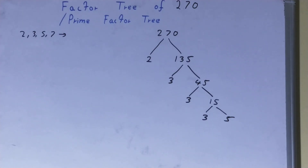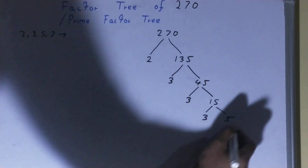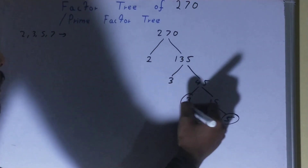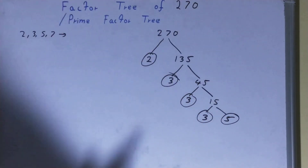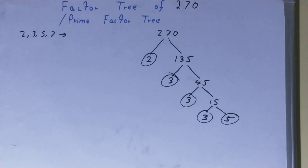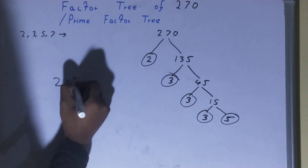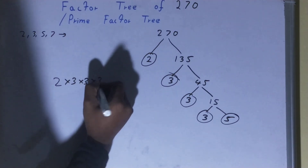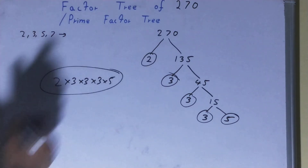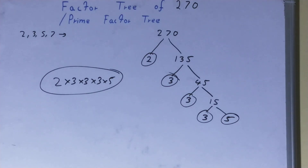The only thing you need to do is circle the ending notes, or terminating nodes, like this, and that will be our required factor tree. If you want, you can write it separately in the form of prime factors. That's all for the video on the factor tree of 270. If you found the video helpful, please hit the like button, do consider subscribing, and thanks for watching.